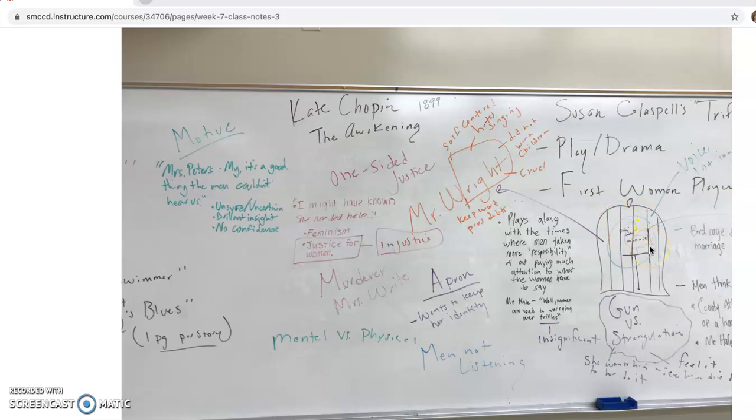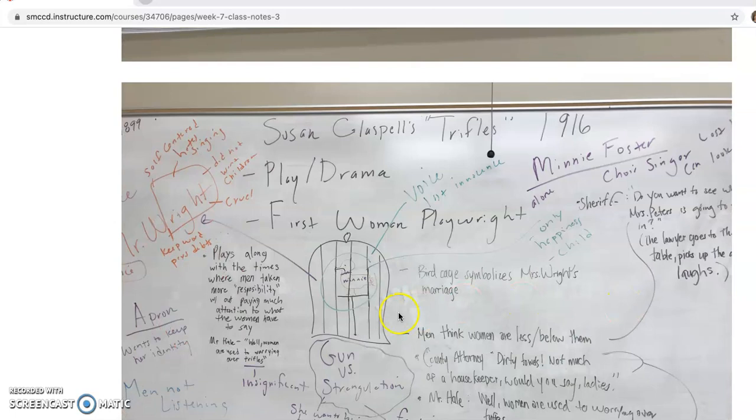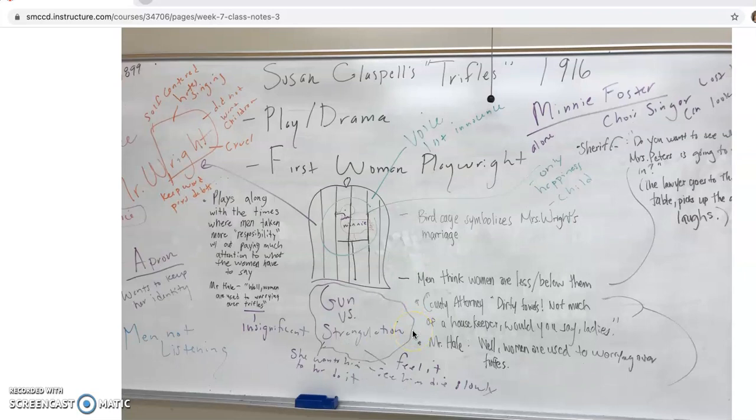And so we learn that the husband has killed the bird. And so that may be why Mrs. Wright, Minnie Foster, ended up killing him. And the women, of course, understand. And they actually don't tell their husbands, the police officers. They do not let them know what they found out because they're trying to protect her. And in a way it's like women coming together, and really that solidarity of feminism, women together kind of protecting one another.